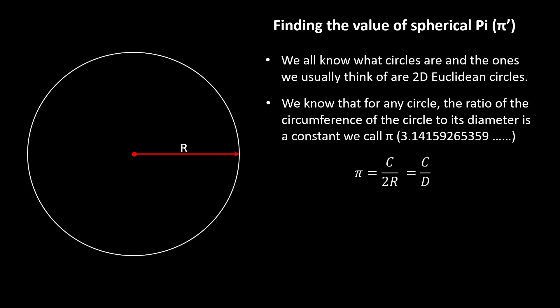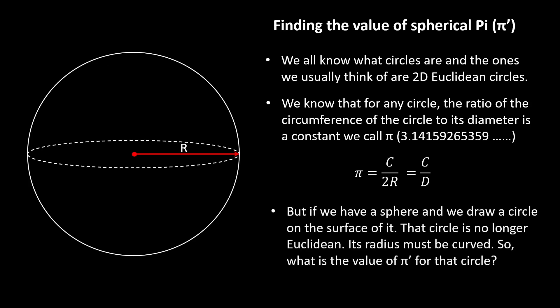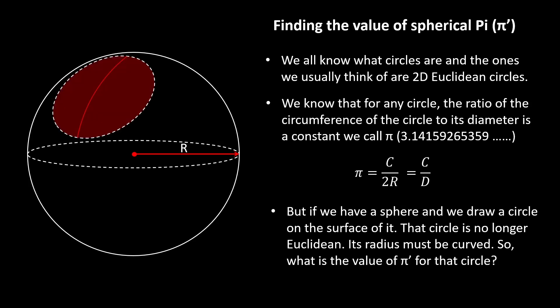But now, what happens if we have a sphere and we draw a circle on that sphere? The radius of that circle is no longer a straight line—it's a curved line across the surface of the sphere. So clearly, that radius can't be the same as the radius for a Euclidean circle. But how can we figure out what it should be?